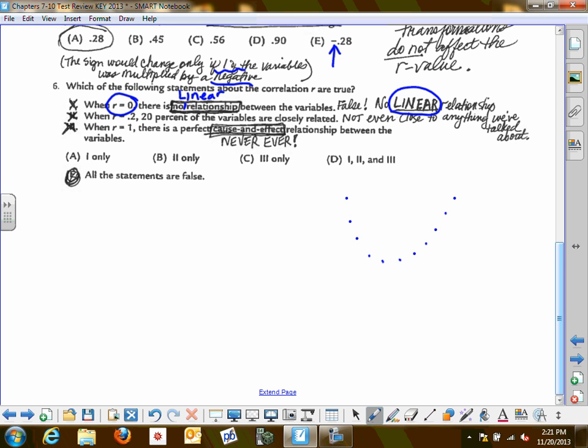But it's not a linear relationship, so it could have had a r value of zero. See, that's the issue. I was fine with two being false. That's like crazy bad. Nothing close to what we've even talked about. But do be careful on three. I even double-checked this one, so I wanted to make sure. Cause and effect is something that we can never, ever say. Even if it appears to be a perfect r equals one correlation.